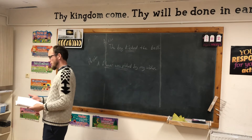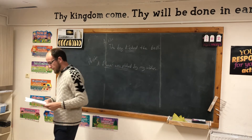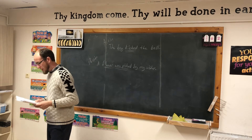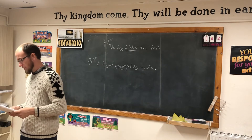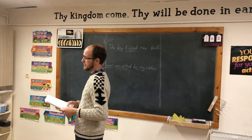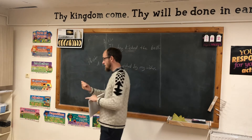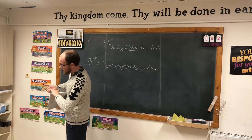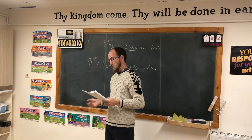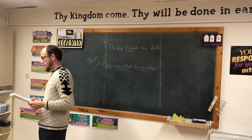Let me read the spelling words so you know how they sound: induce, tycoon, aluminum, ruse, futile, dispute, transmute, cuticle. What is a cuticle? Those little things by the edge of your fingernail that rip out and start feeling really sore — those are cuticles. Truce, tunic, accumulate, Pluto.